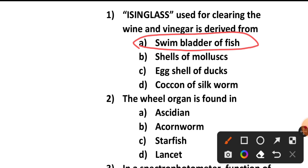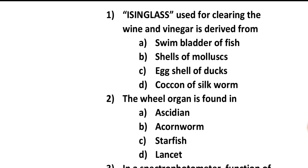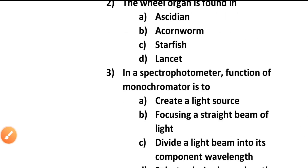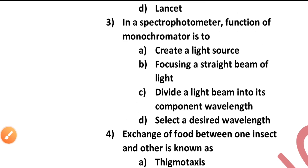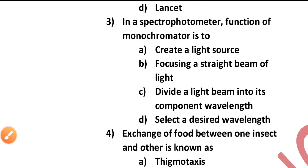Question number two: The wheel organ is found in — ascidian, acorn worm, starfish, or lancet? It is found in lancet.